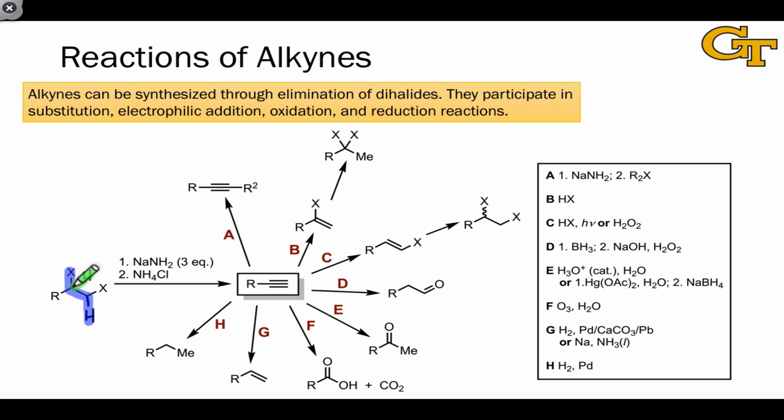Then a second equivalent of HX is eliminated to form the alkyne product. When a terminal alkyne is the desired product, it's important to use three equivalents of the base.